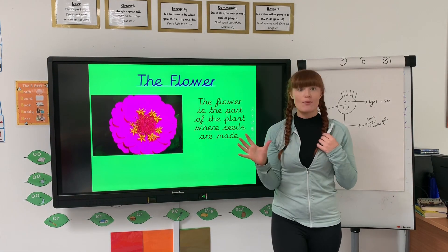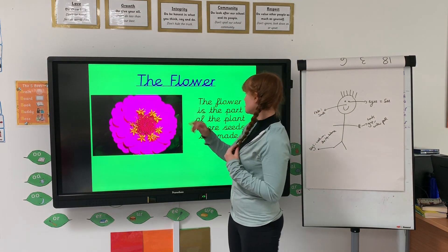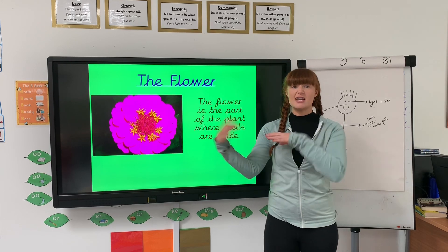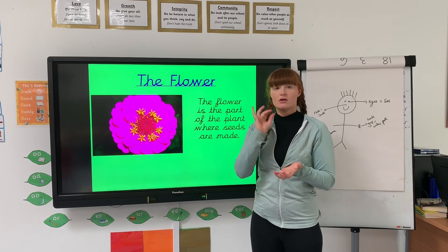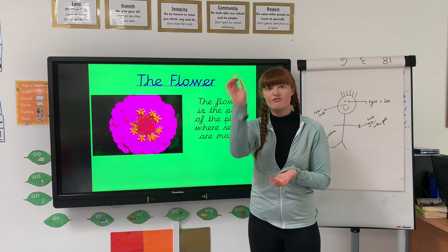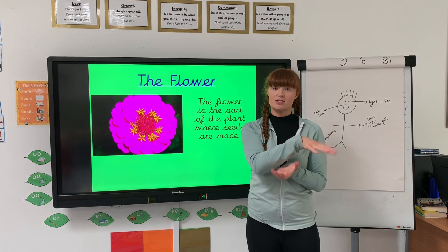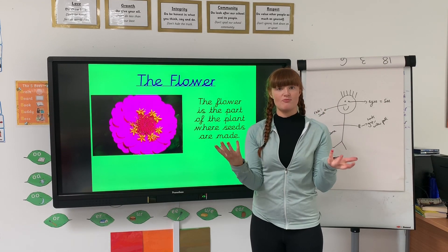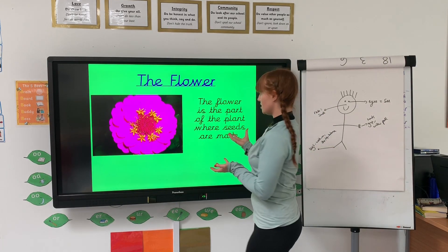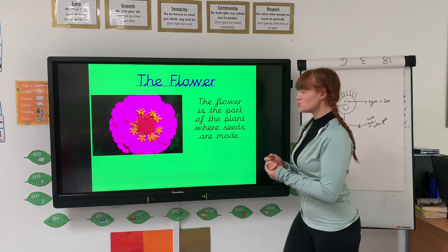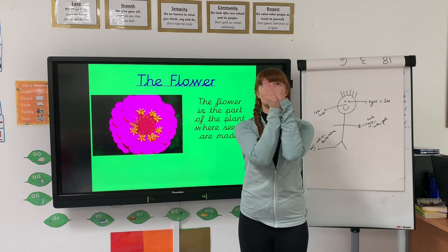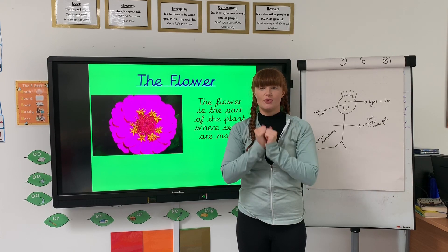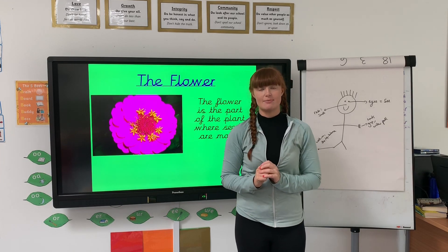Then we've got the flower. The flower is the part of the plant where the seeds are formed. For example, on a really windy day, seeds from the flower might fall down, be blown in the wind, go into some mud, and then rain will fall and it will start to replant and regrow — another flower will be made. The flower is where the seeds are made.